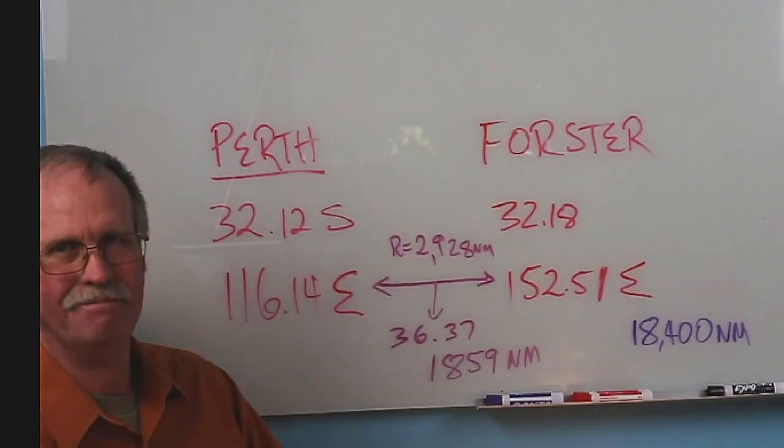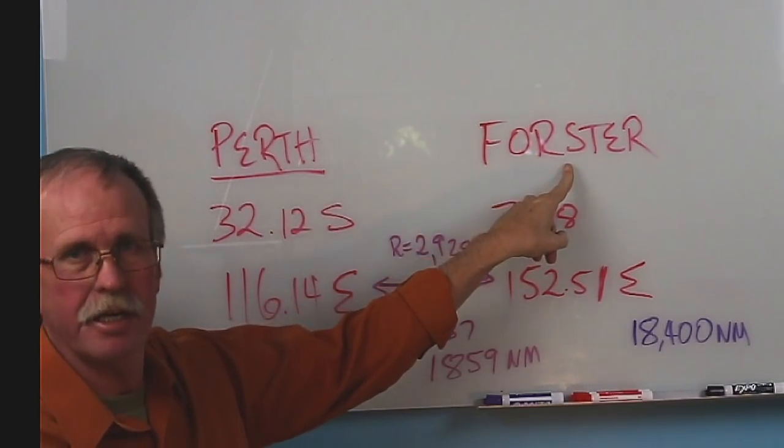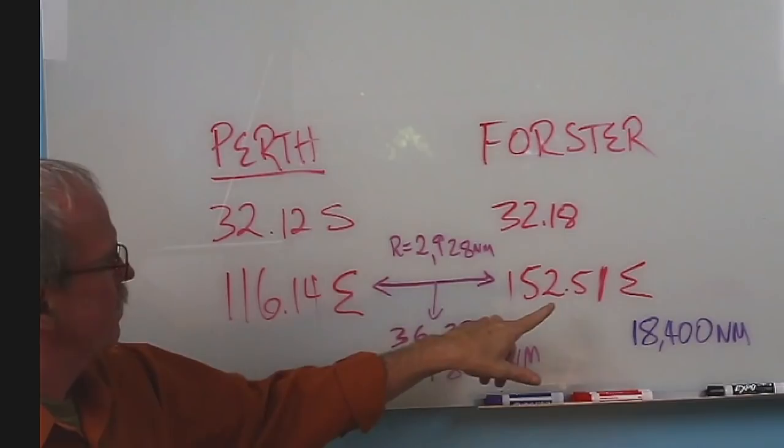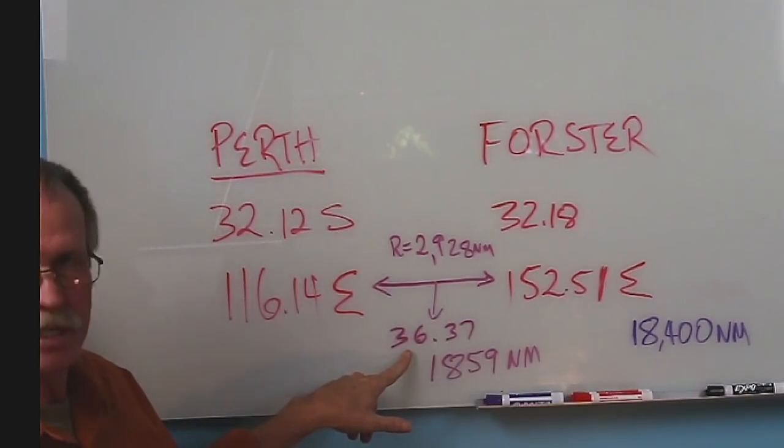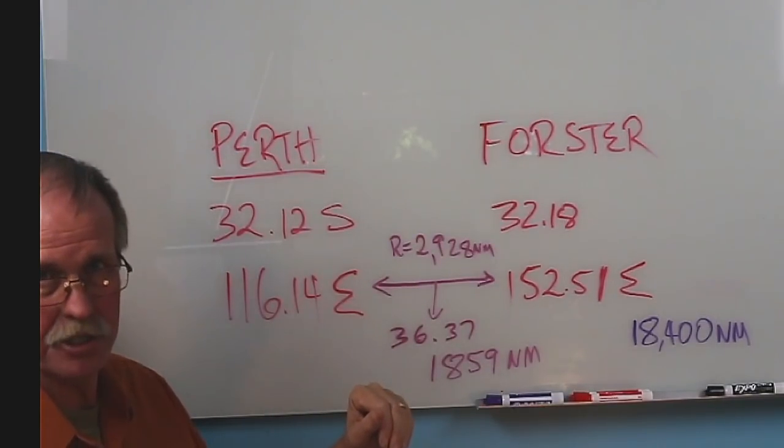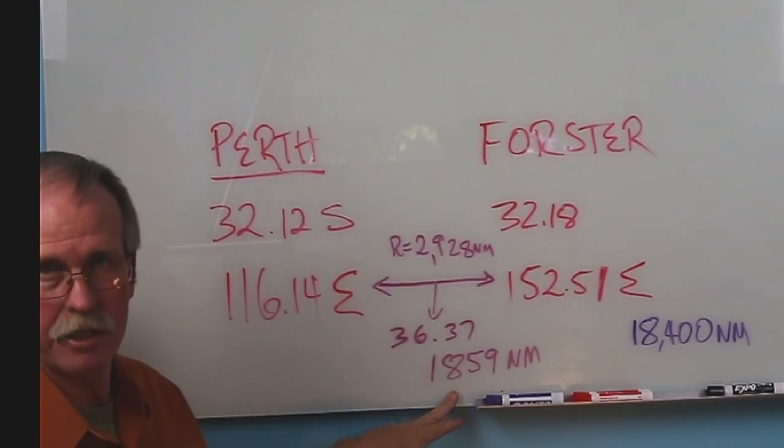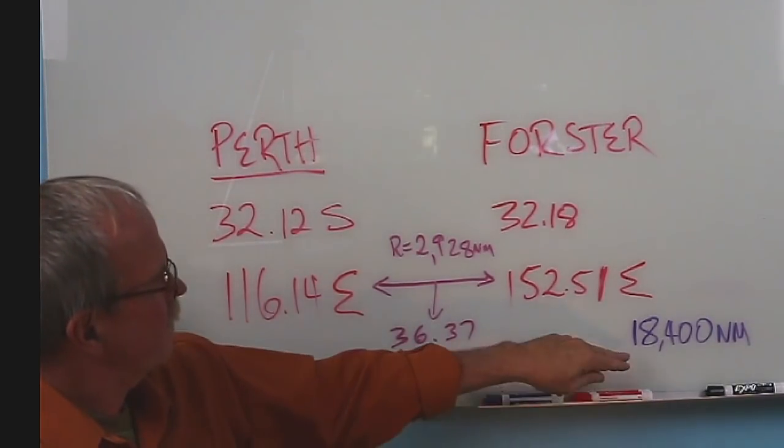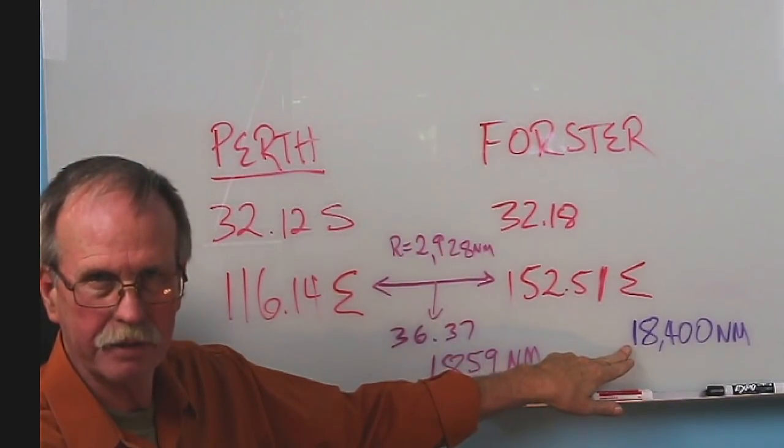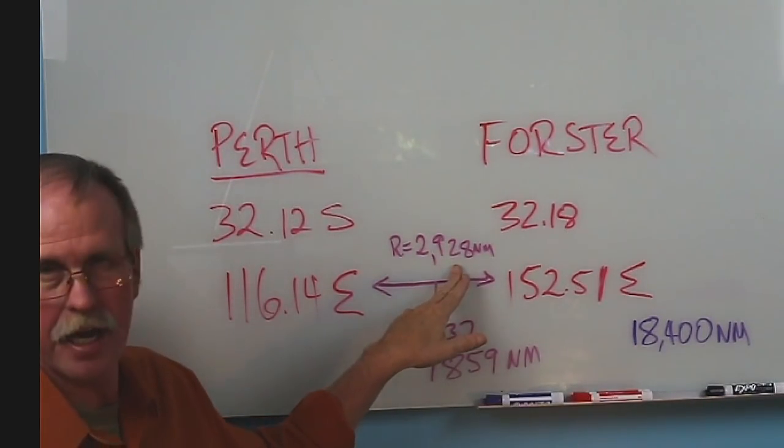Mitchell, this one's for you. How about Perth in Western Australia? The Forester, which I guess is north of Sydney, so that would be what? New South Wales? Here's the coordinates of Perth and Forester. It's 36.37 degrees of longitude between these two locations. And again, we're actually in the other hemisphere. We're in the eastern hemisphere now. And that distance is measured out at 1,859 nautical miles. Now, that would give a circumference of the Earth of 18,400 nautical miles. Wait a minute. That's less than the equator. I thought it would have to be more than the equator. We'll figure that out in a minute. And that would be a radius of just shy of 3,000 miles.